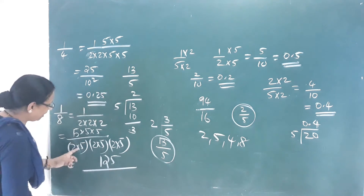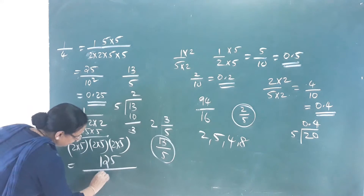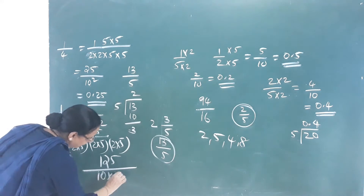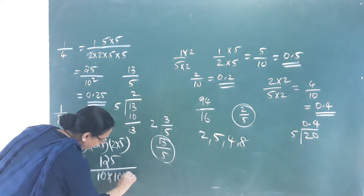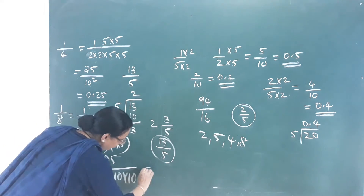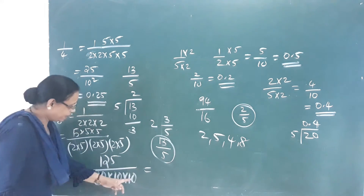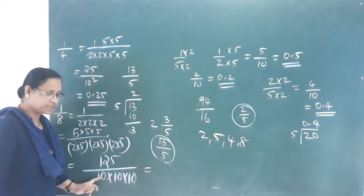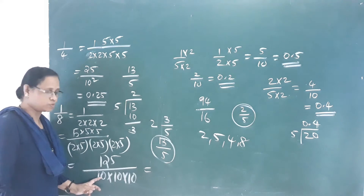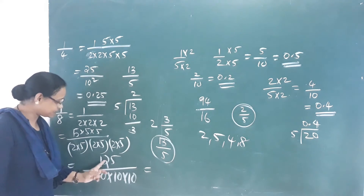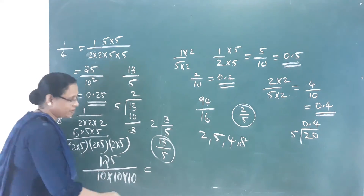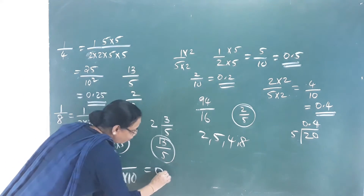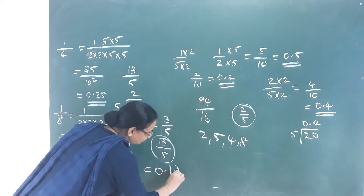125 divided by 10 into 10 into 10 — that means 3 zeros, so 3 decimal places. Therefore 1 by 8 equals 0.125.